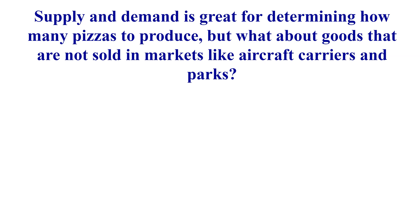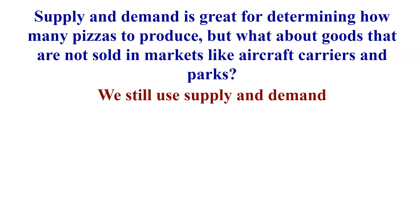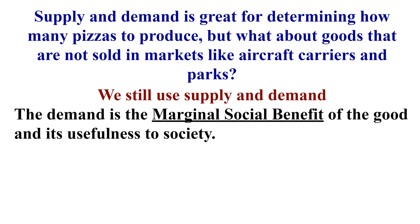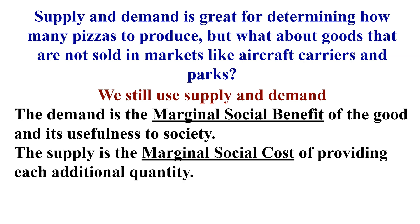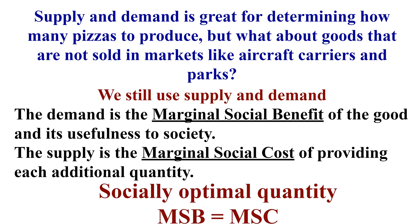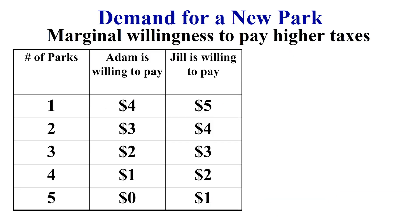Whether it's pizzas, aircraft carriers, or building parks, we use the same supply and demand concepts from Unit 1. We apply them to what we call marginal social benefit — society's demand or the benefit society gets — and marginal social cost, which is the upward sloping supply curve as costs rise with more production. We're striving for equilibrium where marginal social benefit equals marginal social cost, just as MB equals MC. It's the marginal social benefit that should equal the marginal social cost.